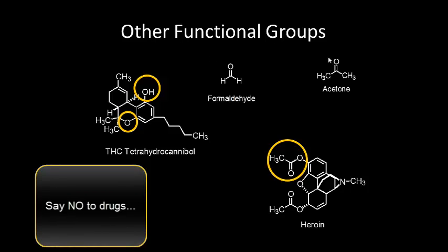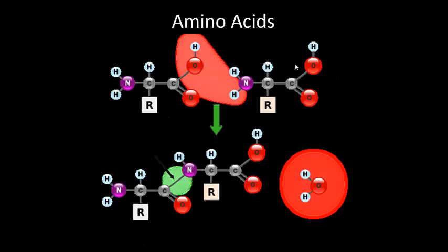Formaldehyde is an aldehyde — the simplest aldehyde that exists — as well as acetone, which you'll run into in any nail shop in America. Even amino acids have a carbon backbone.